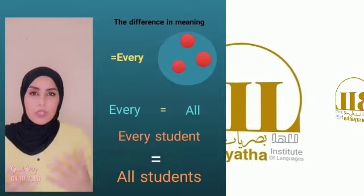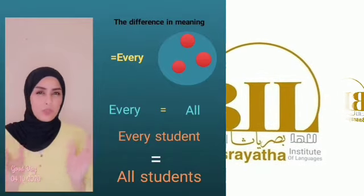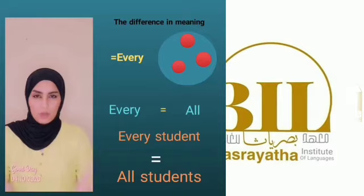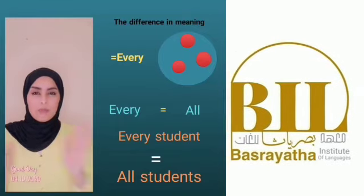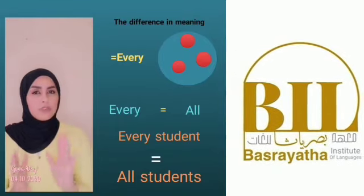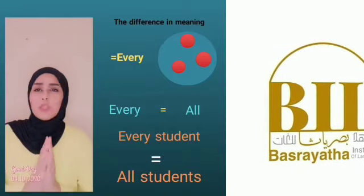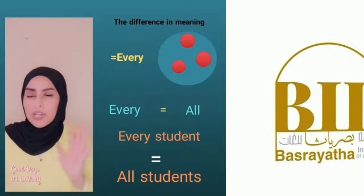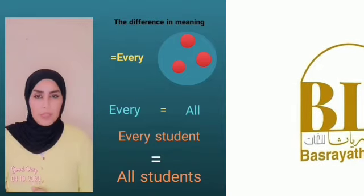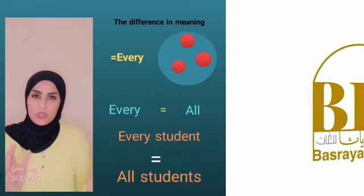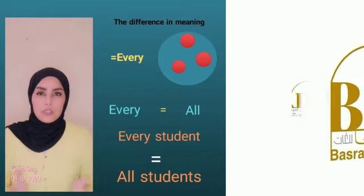We use 'every' when we think of things as a group. For example, you come to your students and tell them: 'Hey boys, many of you didn't pass the exam, but don't worry — everyone will have five extra marks, a gift from me.' So 'every student' or 'everyone' means all students.